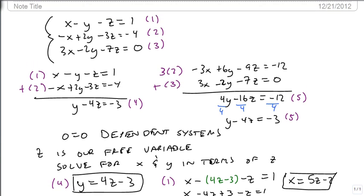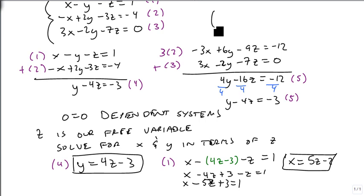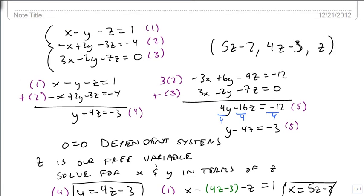And our answer is going to be the triple 5z minus 2, 4z minus 3, z. And this allows us to pick any particular z and it will give us a point that will make all three equations true. And this way we only have to worry about one of the variables at a time. So this is how we're going to write our answer.